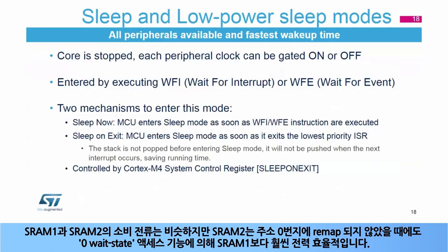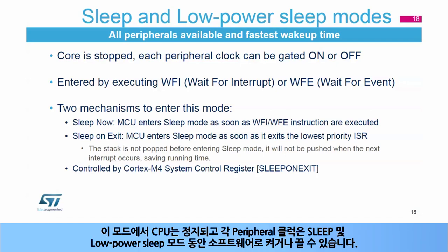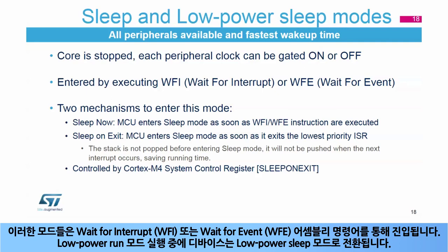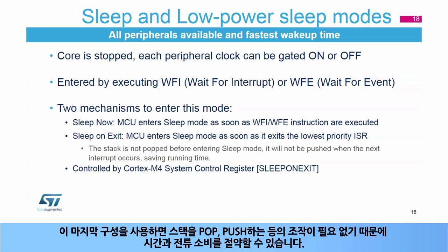Sleep and low-power sleep modes allow all peripherals to be used and feature the fastest wake-up time. In these modes, the CPU is stopped, and each peripheral clock can be configured by software to be gated on or off. These modes are entered by executing the assembler instruction wait-for-interrupt or wait-for-event. When executed in low-power run mode, the device enters low-power sleep mode. Depending on the sleep-on-exit bit configuration in the Cortex-M4 system control register, the MCU enters sleep mode as soon as the instruction is executed, or as soon as it exits the lowest-priority interrupt subroutine, saving time and consumption by avoiding stack pop and push.